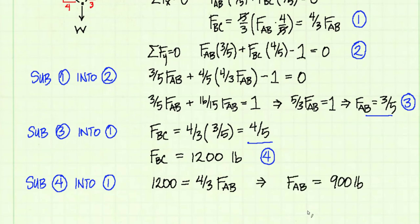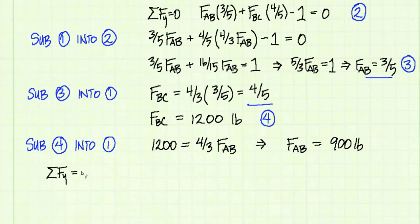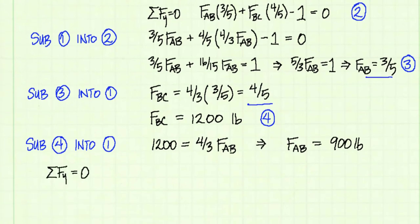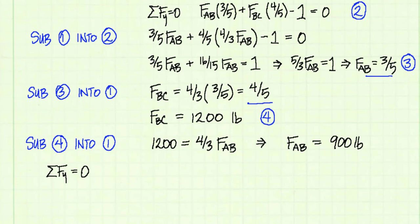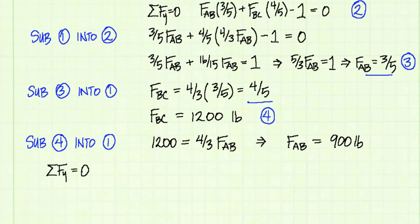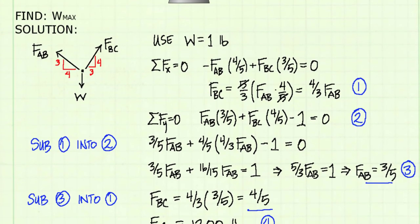And solving for force AB, I get that it will be equal to 900 pounds. Let's now sum our forces in the y direction again, this time with our correct values for force AB and force BC. Instead of using 1 pound for our weight, we'll solve for the weight.